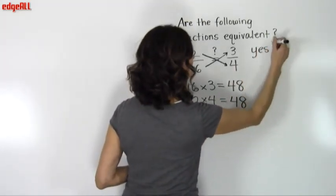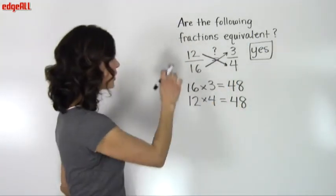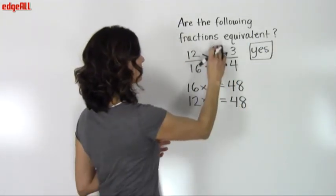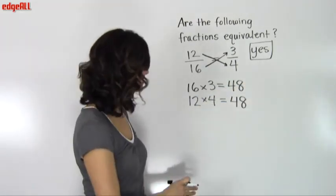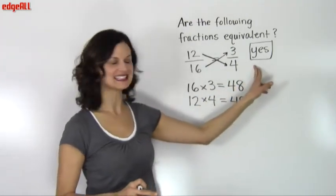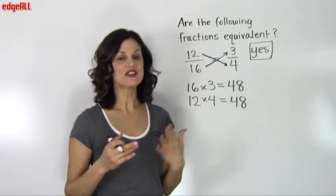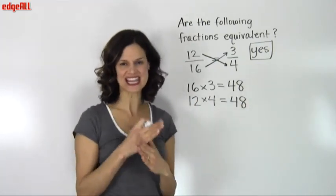So yes, in this case, these two fractions, 12 sixteenths and 3 fourths, are equivalent fractions. So our answer to the problem is yes. And you simply need to remember that if the cross products are equal, the fractions are equivalent.